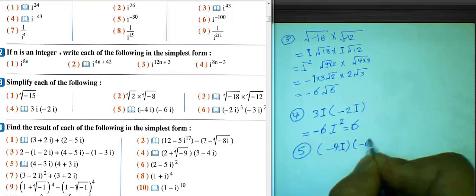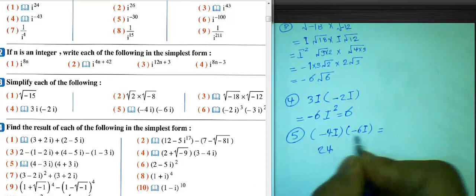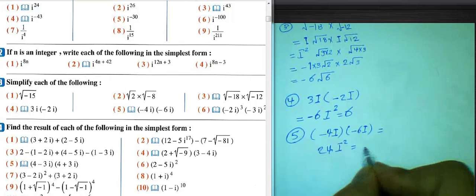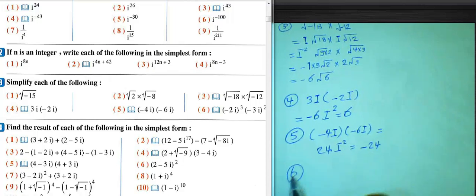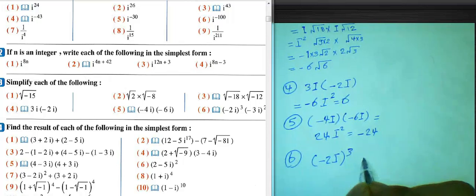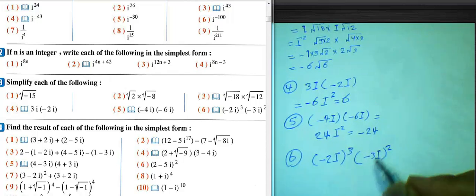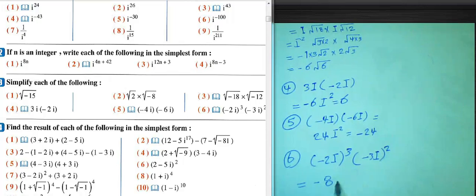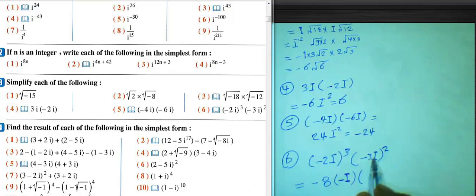Negative times negative equals positive. 4 times 6 equals 24. i times i equals i^2, i^2 equals negative 1. The result will be negative 24. Next: negative 3i squared — negative 3 squared equals 9, i^2 equals negative 1.